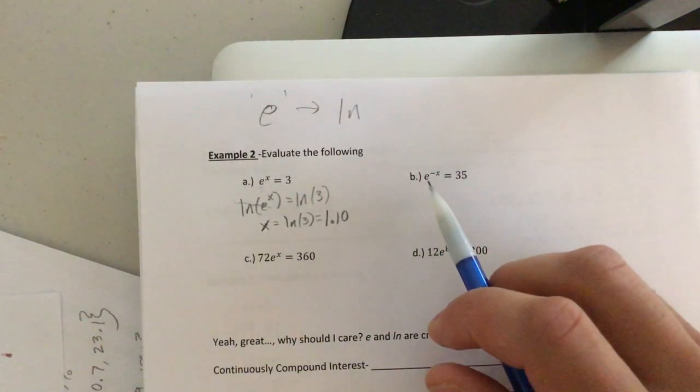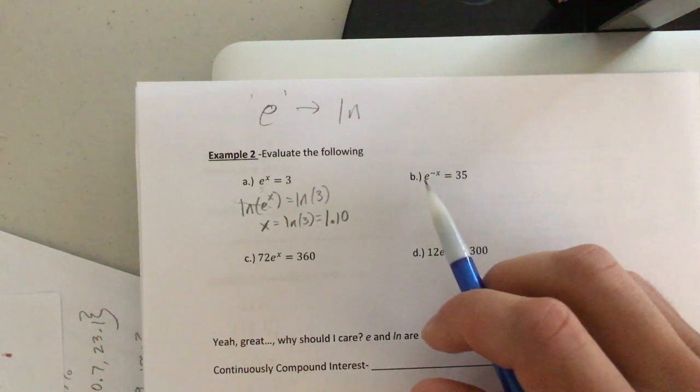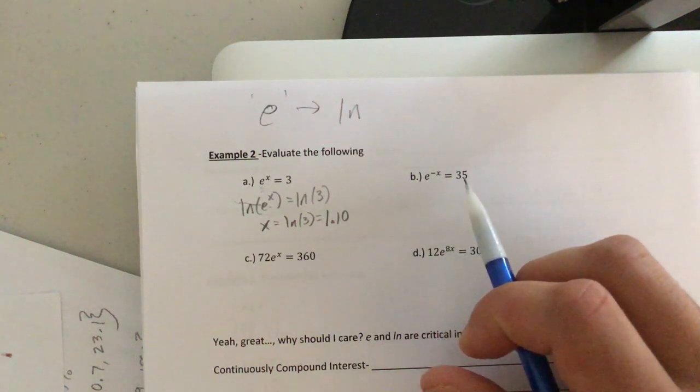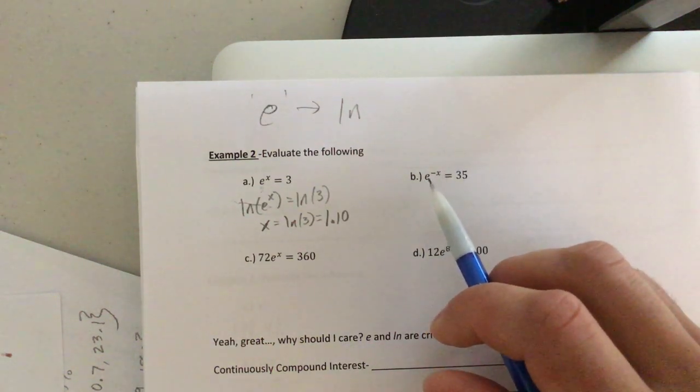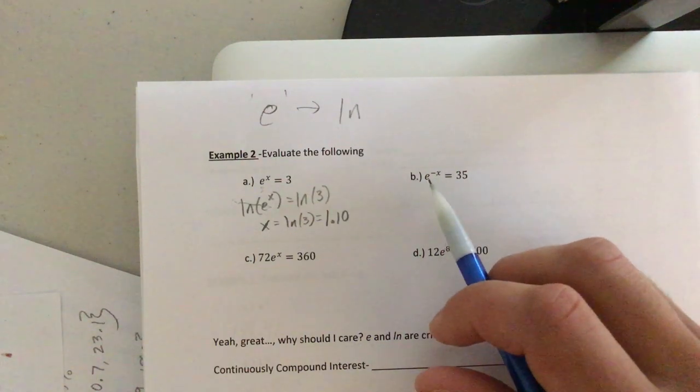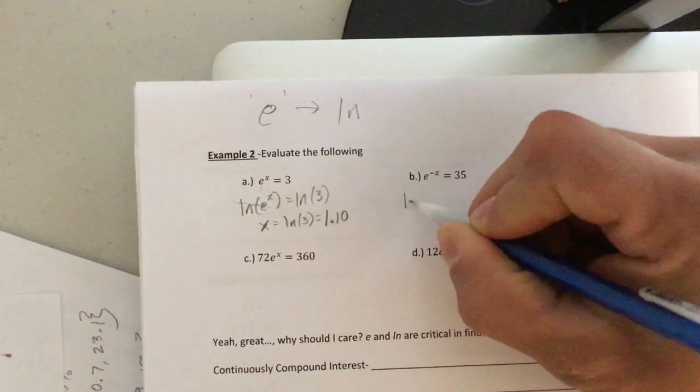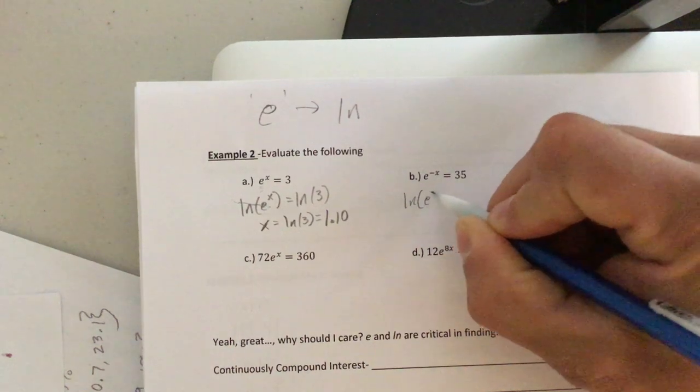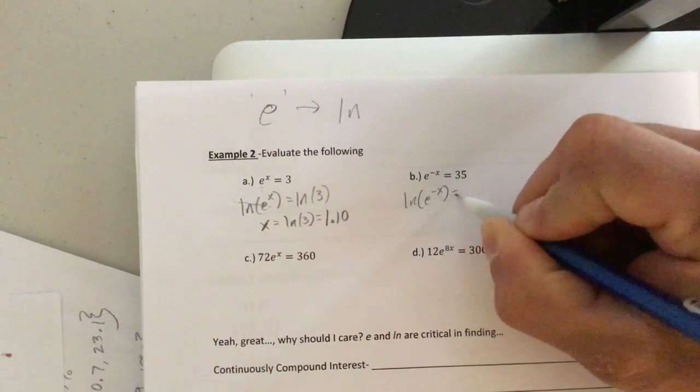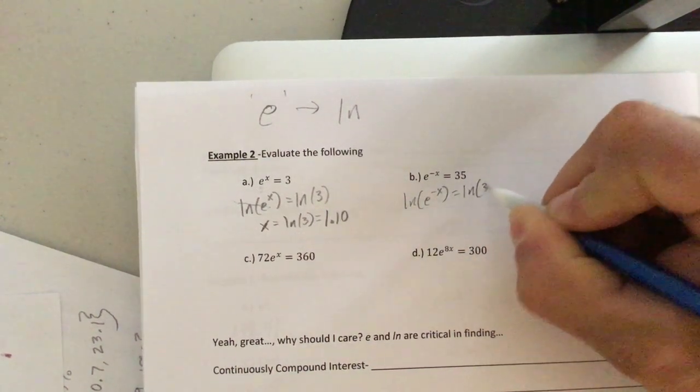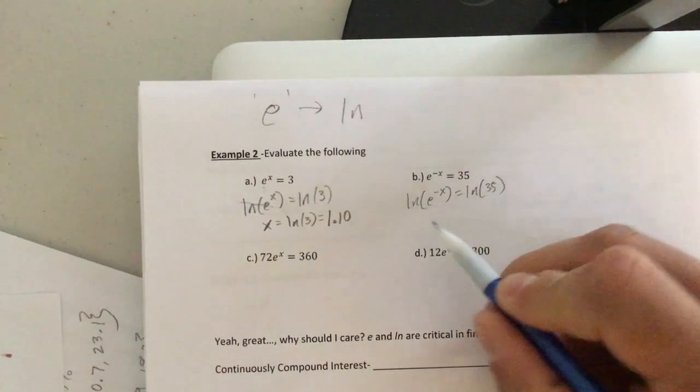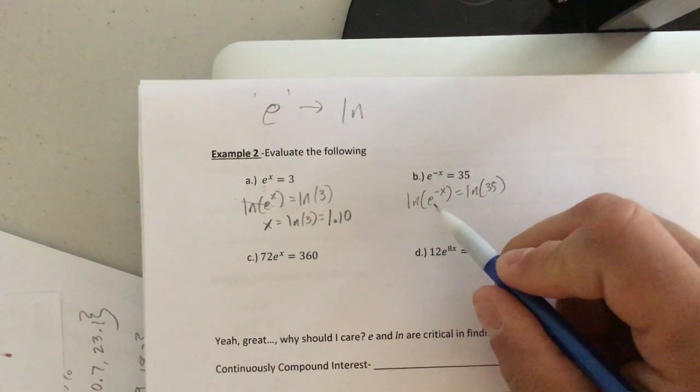Letter B, same concepts, just a little more difficult. We have E to the negative X equals 35. Well, once again, there's nothing we can do right now except to try and eliminate that E. So we're going to take the natural log of both sides. Okay.